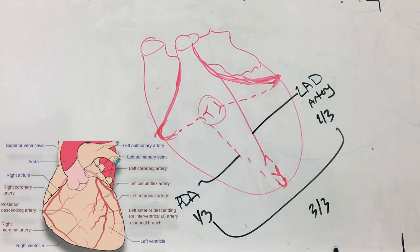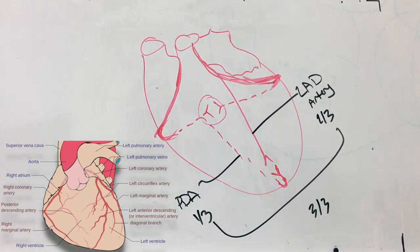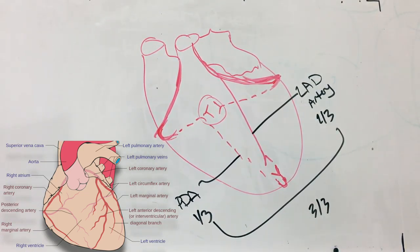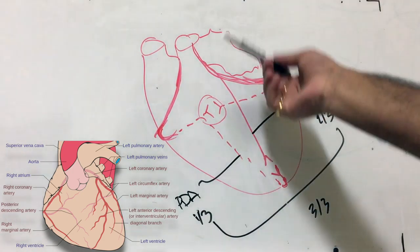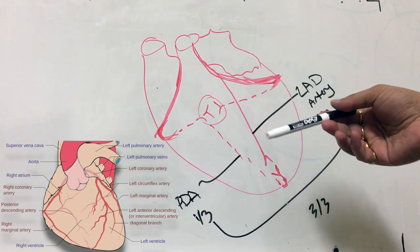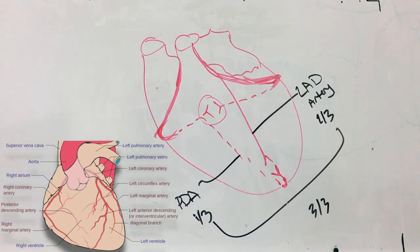Is this important? Absolutely. What exists on the intraventricular septum are essentially the papillary muscles, and the papillary muscles control the valves for opening and closing. So any kind of infarction that affects any of these can in turn affect valvular function.